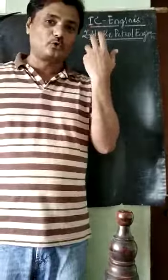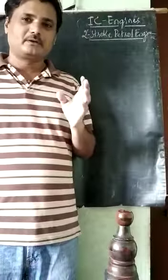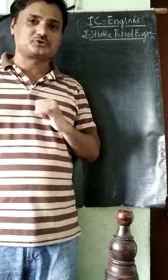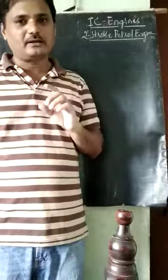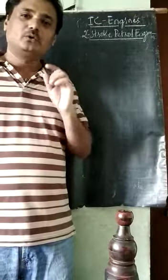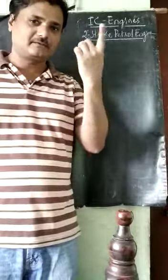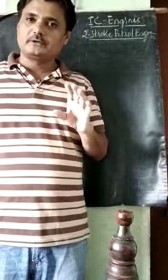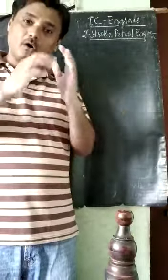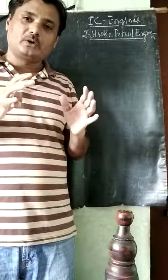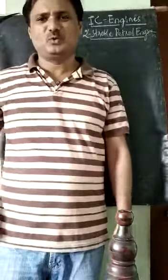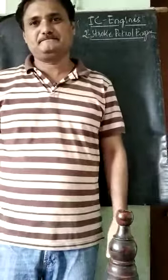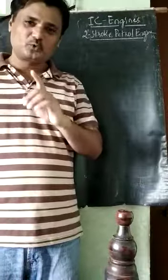In the four-stroke engine, the four strokes — suction, compression, expansion, and exhaust — take place over two revolutions of the crank. In the two-stroke engine, all four strokes — suction, compression, expansion, and exhaust — are completed in only one revolution of the crank.